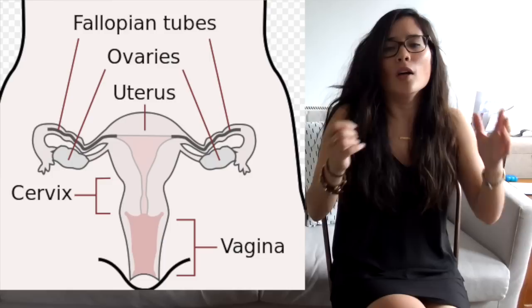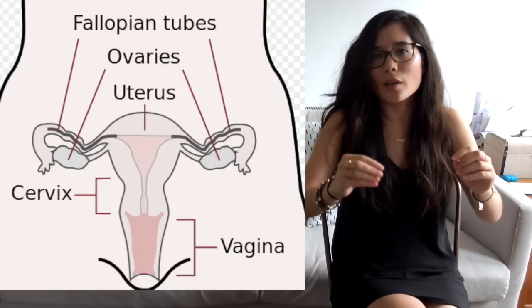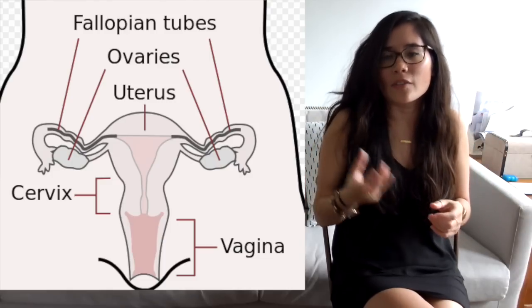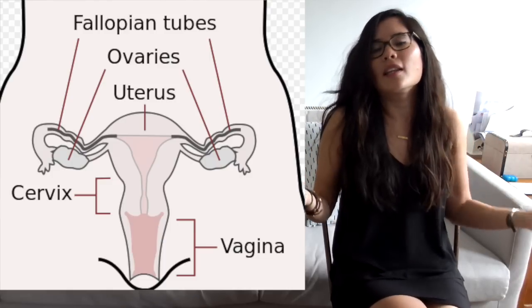However, when the woman gives birth, the cervix will open and the baby will have to pass down the vagina and out into the real world. Welcome to the world, baby! So I think that was everything I wanted to say about the female reproductive system.